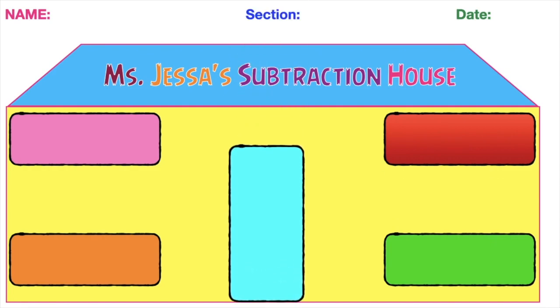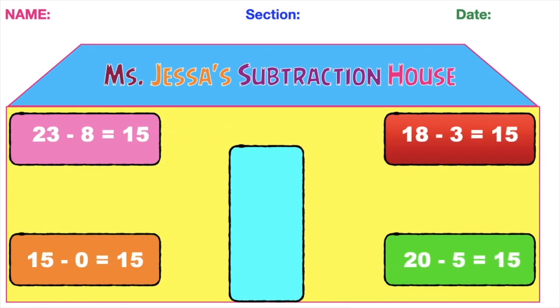Your goal here is to write five subtraction sentences with the same difference, just like this. So we have 23 minus 8 is equal to 15. 18 minus 3 is equal to 15. 15 minus 0 is equal to 15, and so on. As you can see, all the difference are the same.